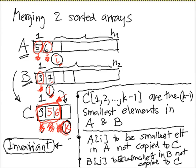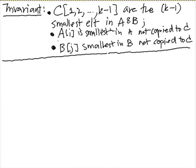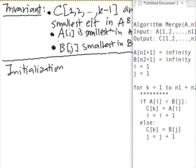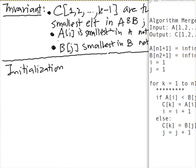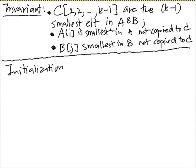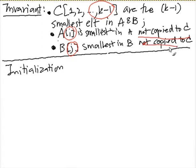So with that invariant, we're going to show the three properties. Initialization is easy. Looking at the code, in the first round K is one, so the first K minus one elements contains basically nothing — that condition is trivially true. And since I is one and J is one, and A and B are sorted, A[1] and B[1] are the smallest elements, and nothing has been copied to C yet. So initialization holds.